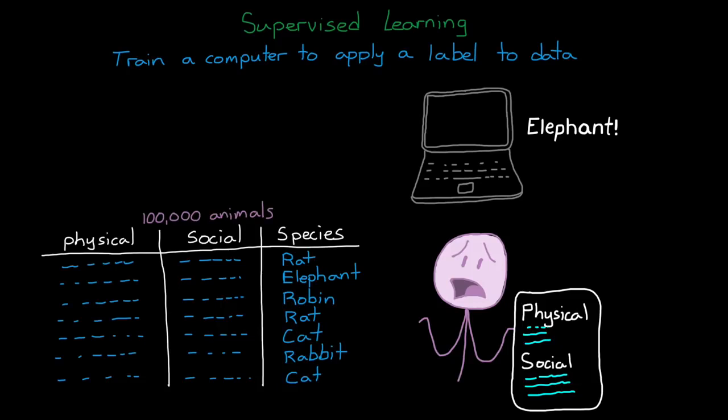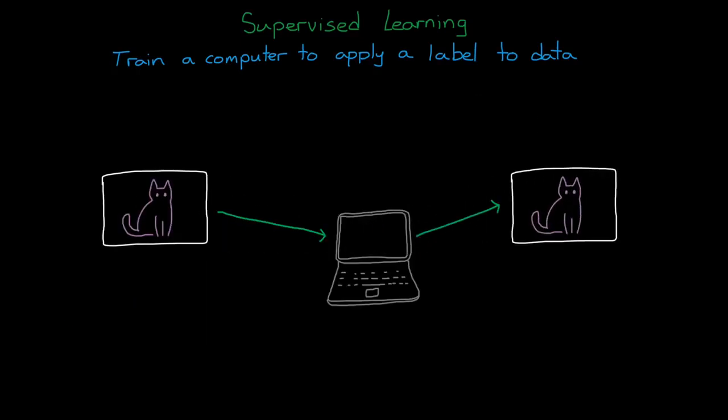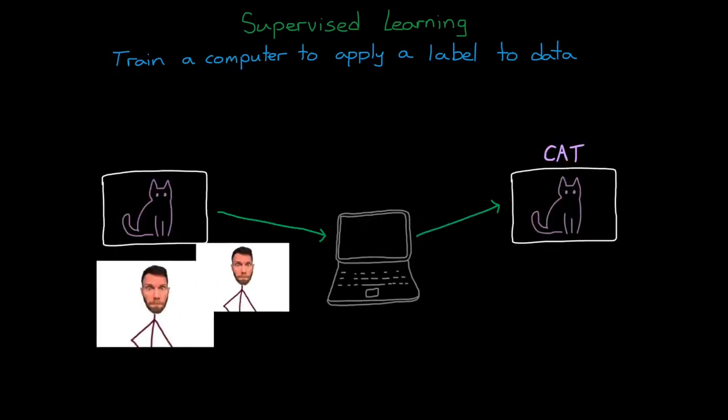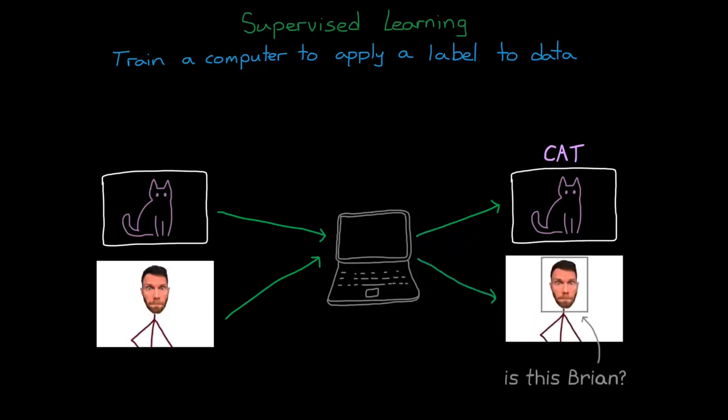And supervised learning is probably the type of machine learning that most people are familiar with, because it's what allows computers to recognize pictures of cats, or your friends in photos. And fundamentally, applying a label to an image is exactly the same problem as applying a label to a data set of animal features. We input a bunch of training images into the model, and then we tweak the model based on whether it guessed correctly or not, until it's accurate.